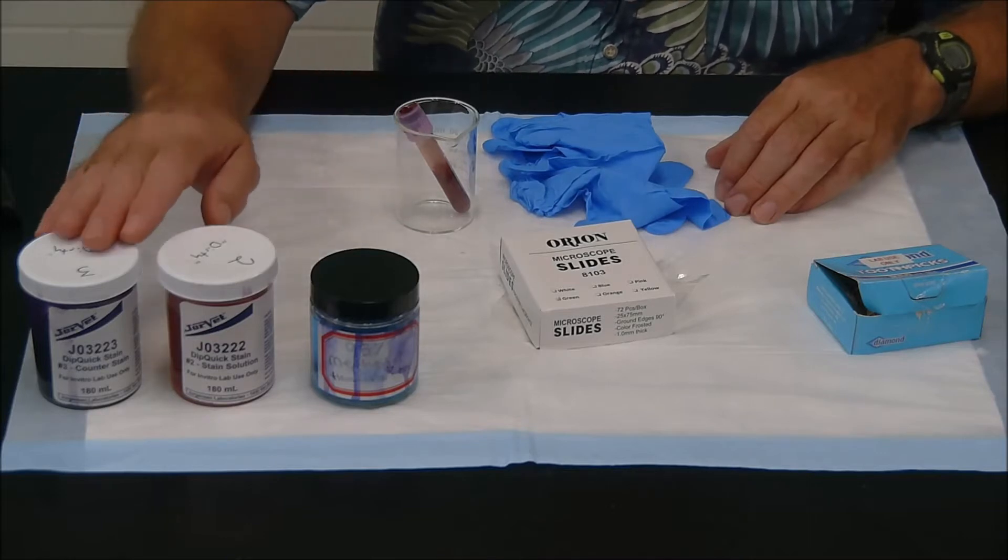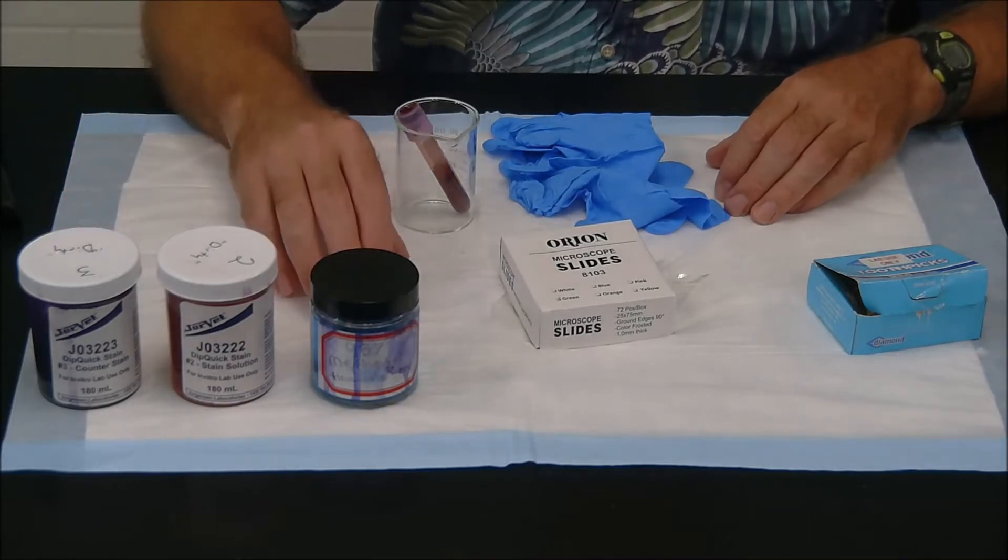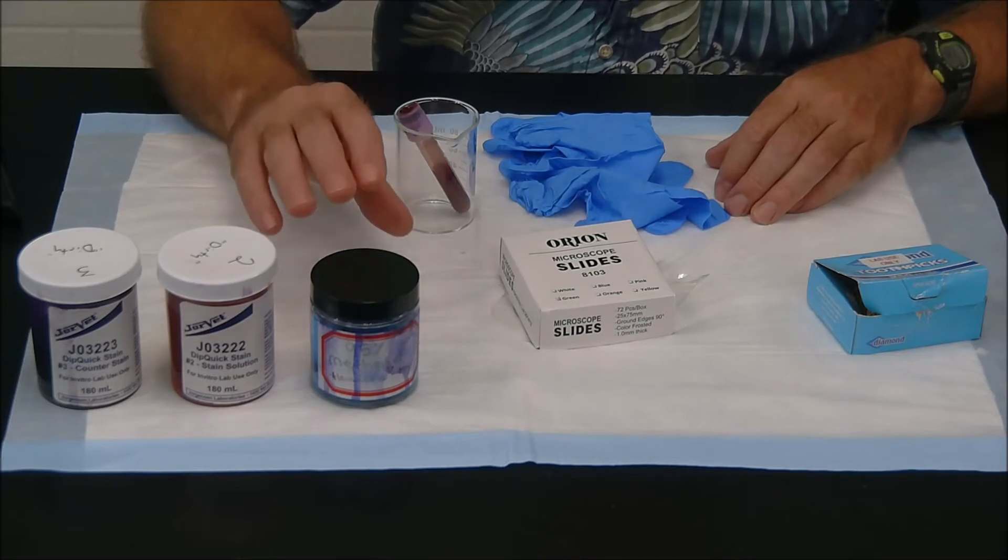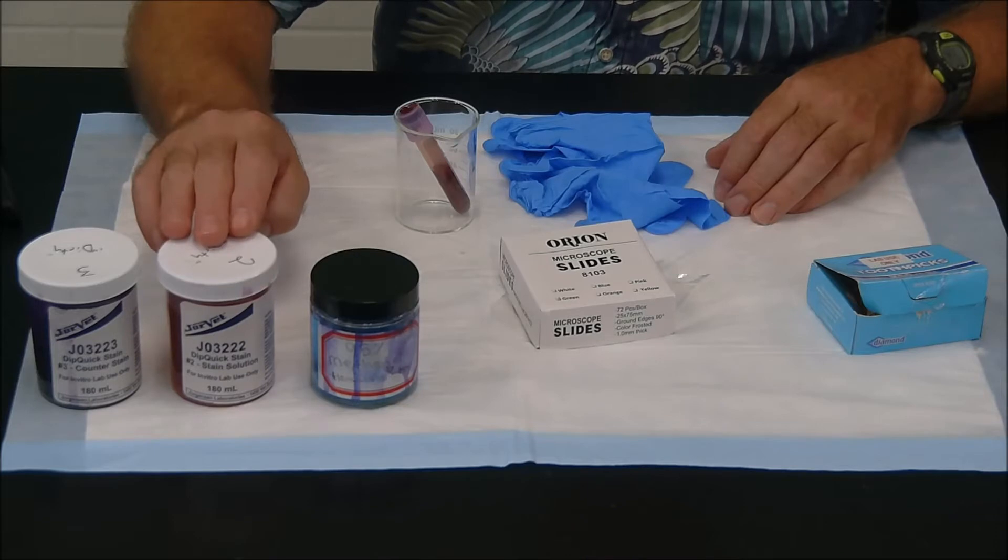And then we have three different stains here. First of all, what we have here is methanol. And methanol is going to act as our fixative. And this is the primary reason we're wearing gloves because methanol is very, very toxic. After that, we're going to immerse our blood smear in the second stain here, which is eosin. And eosin is going to stain most of the cytoplasm.